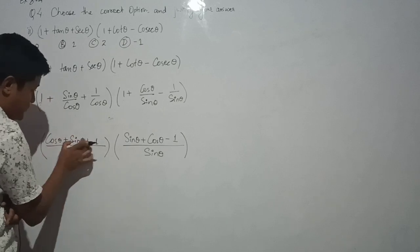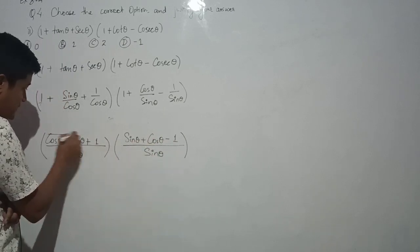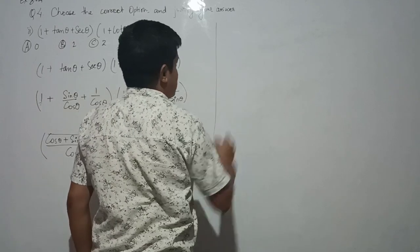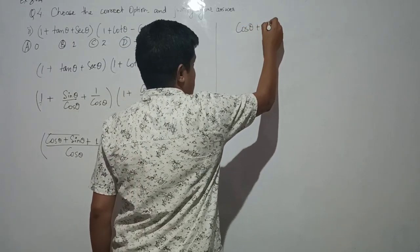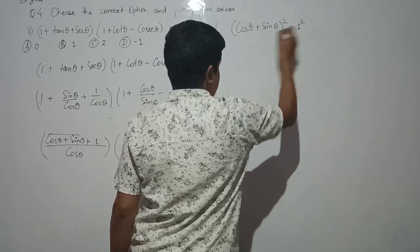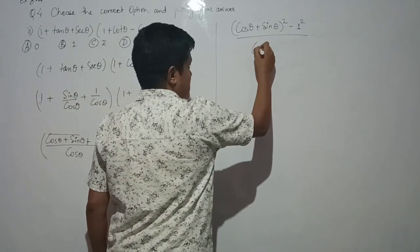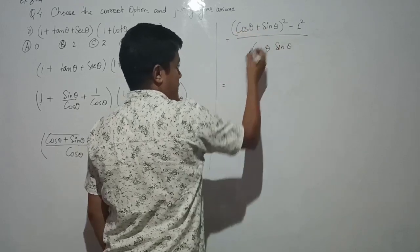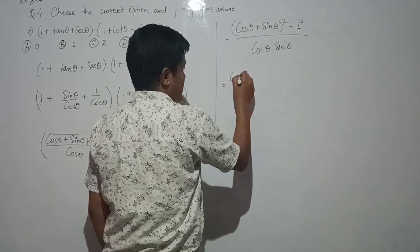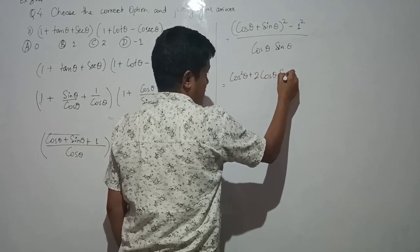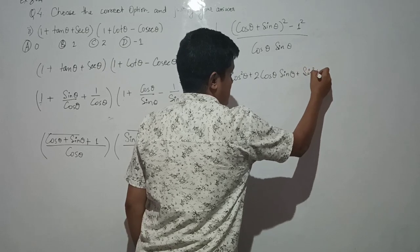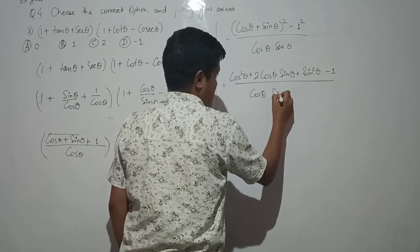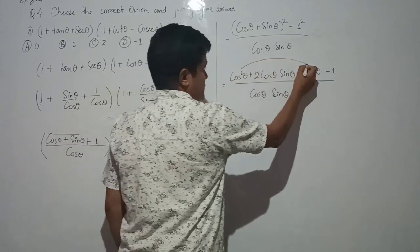Now we have (cosθ + sinθ + 1)(cosθ + sinθ − 1) in the numerator. Recognizing the a plus b times a minus b pattern, this equals (cosθ + sinθ)² minus 1². Expanding using the formula a plus b whole square equals a² + 2ab + b², we get cos²θ + 2cosθsinθ + sin²θ minus 1.